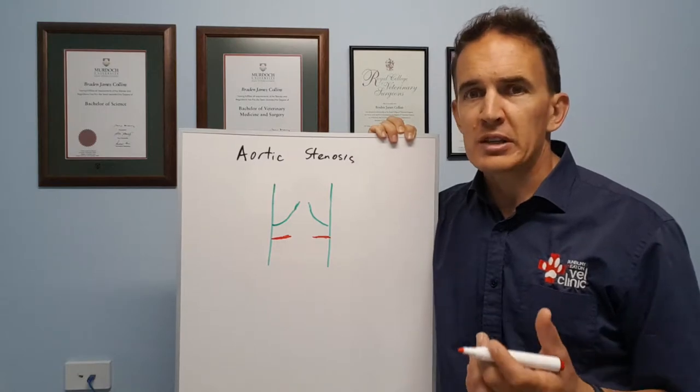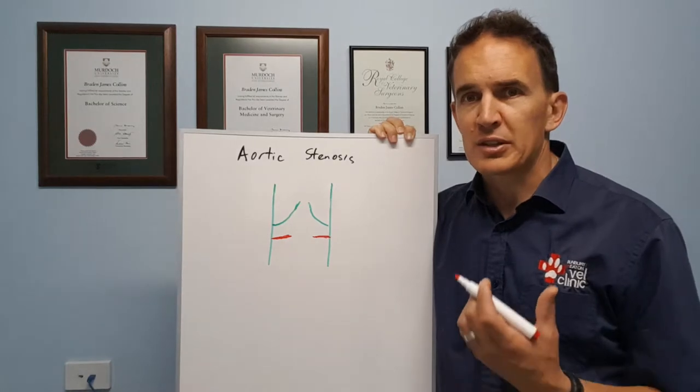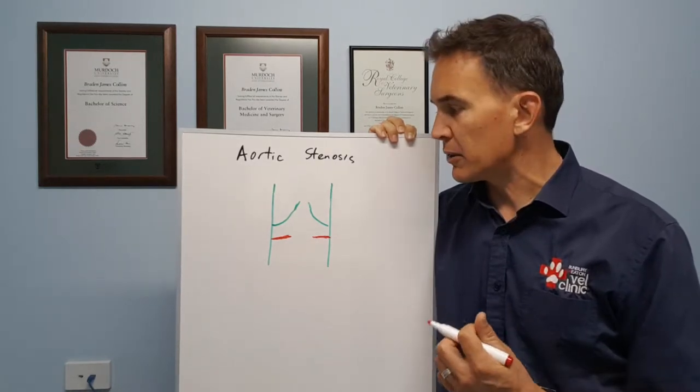Probably around 12 weeks of age we should be able to pick this up in most dogs, but generally by the time they're 12 months old things have really developed about as far as they're going to.